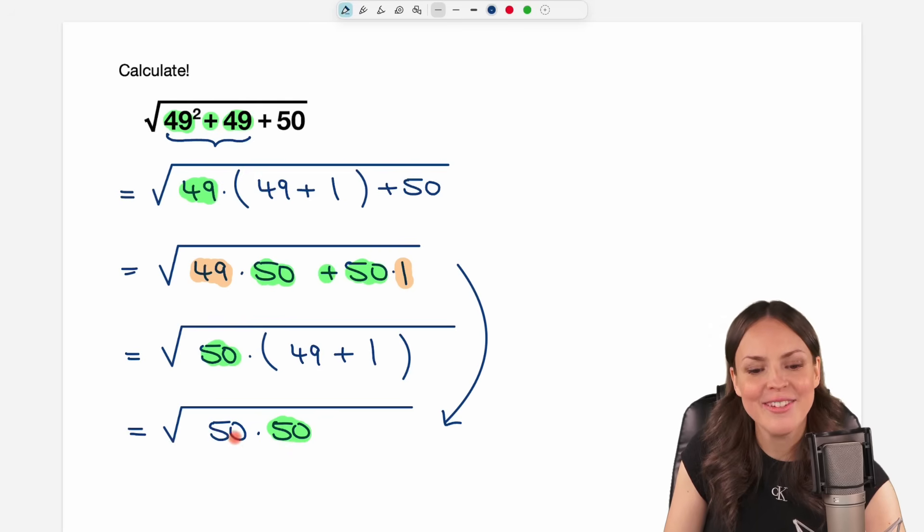We can write the 50 times 50 as 50 squared so that we have this here. And then we can cancel the square root and the square and only the 50 is what is left.